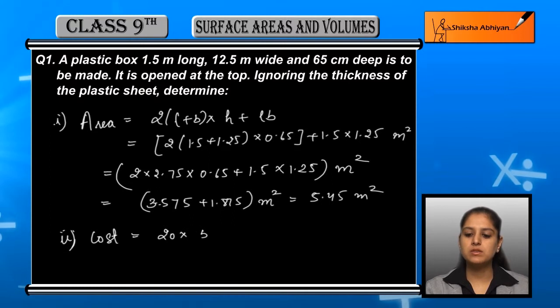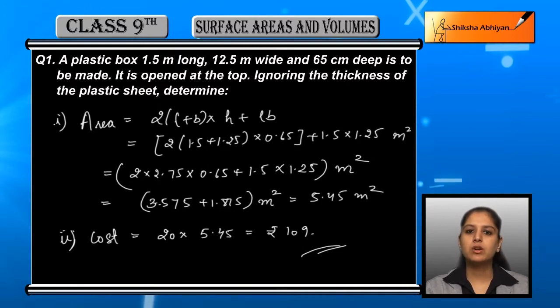In the last step, we add these and get 5.45 meter square as our area. The area is 5.45 and cost of 1 meter square sheet is given as rupees 20, so the cost equals 20 × 5.45.